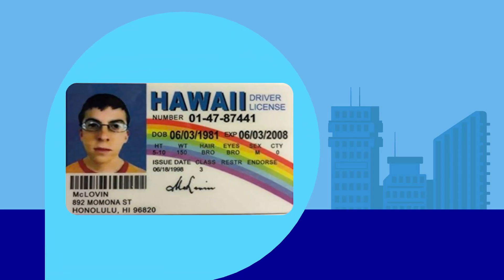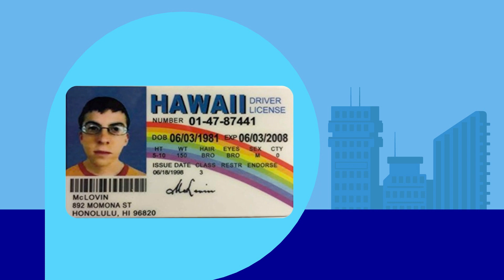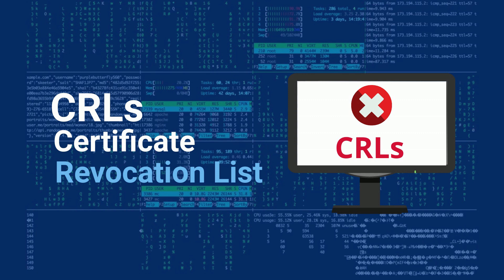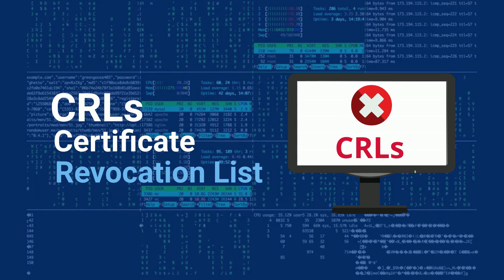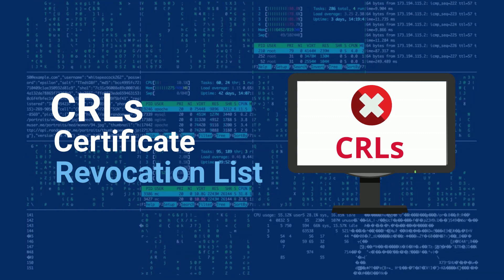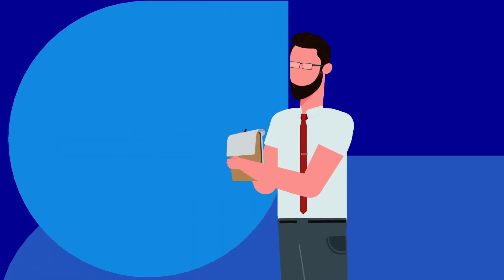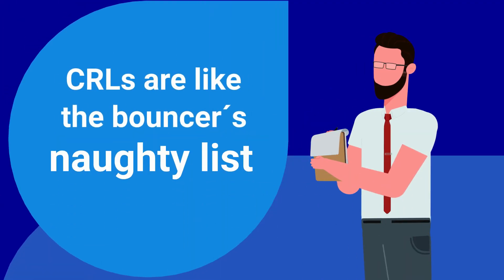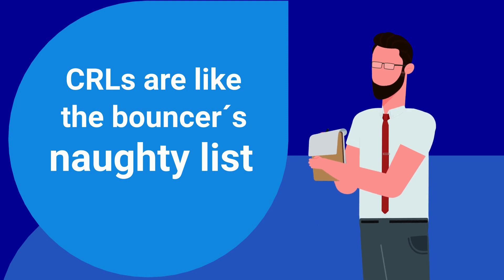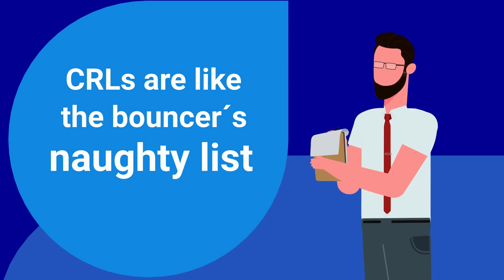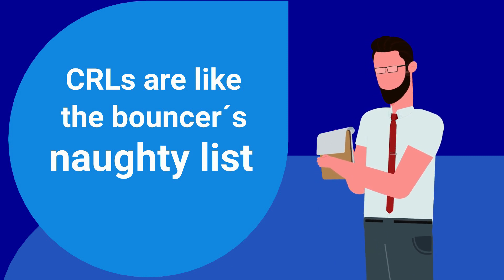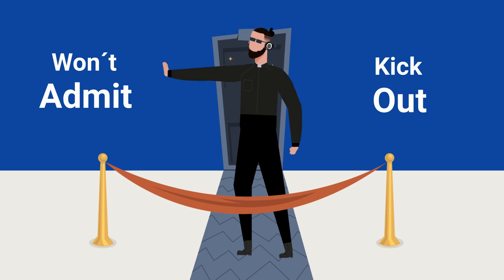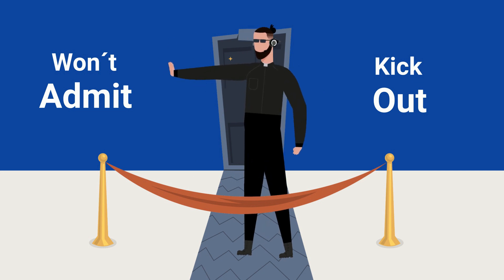Certificates are like personal identification cards that are used for authentication. But who's checking these IDs to make sure they're legit? That's where CRLs come in. Consider them the bouncer's blacklist at a nightclub, diligently checked to make sure only verified certificates are able to authenticate into that club.